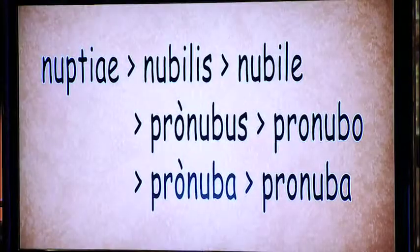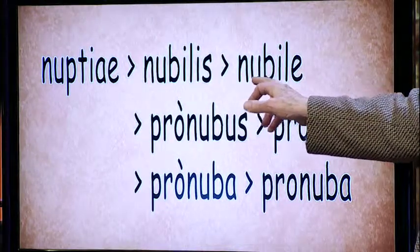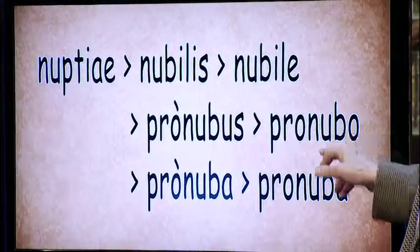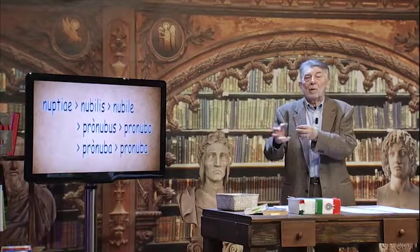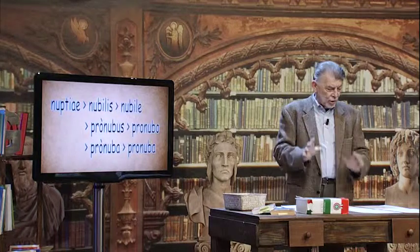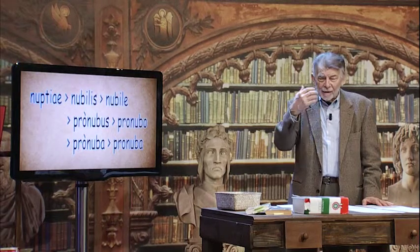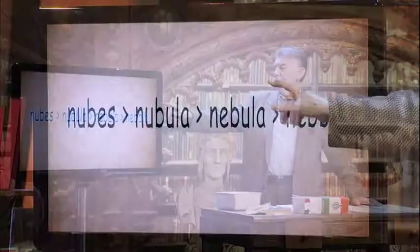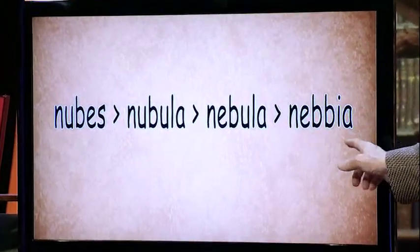Vediamo ancora le derivazioni di questo verbo nubere e di nuptiae. Da nuptiae viene nubilis, che in italiano è nubile; viene pronubus, che ha un significato diverso dall'italiano pronubo — nella nostra lingua non ha un significato particolarmente simpatico, così è chi procura i matrimoni — mentre nella lingua latina significava testimone di nozze. Per concludere su questa parola nubes così ricca di parentele, abbiamo anche la parola nebbia: nubes → nubula, cioè piccola nube → nebula → nebbia.